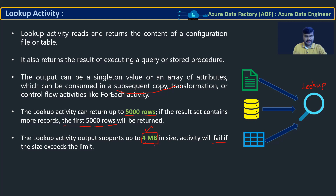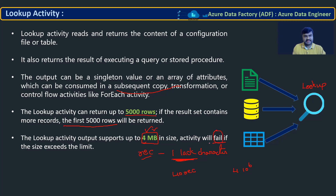For example, if every record has 1 lakh characters — 4 MB means 4 × 10^6 bytes — then you can fetch a maximum of only 40 such records before exceeding 4 MB. You must ensure the data you are fetching does not exceed 4 MB in total size. If it does exceed 4 MB, the activity will fail and throw an error accordingly.